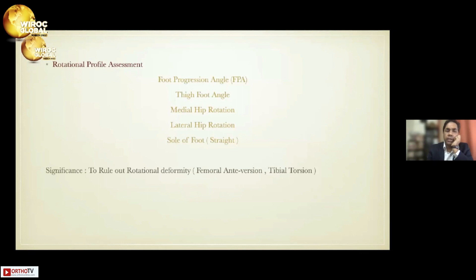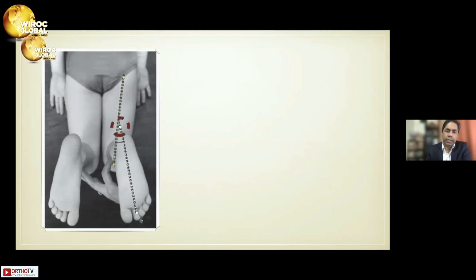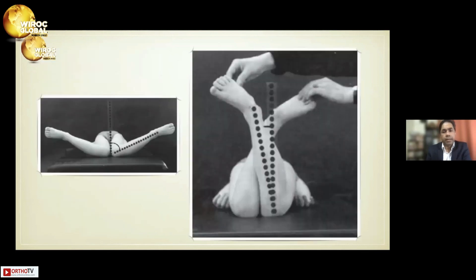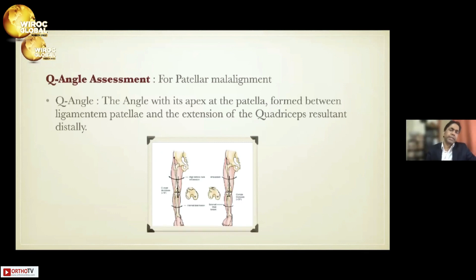I always perform clinical examination for the rotational profile because sometimes we miss these things. We assess the foot progression angle and the thigh-foot angle to evaluate torsion at the tibia. We also need to assess rotations at the hip to exclude whether the genu valgus is contributed by a compensatory mechanism at the hip. Assessment of joint laxity and Q-angle for patellar alignment are also required.